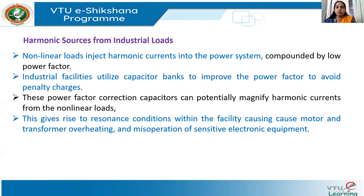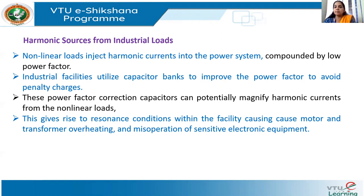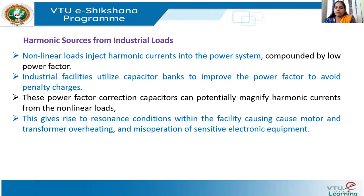Today we are going to see some examples of harmonic sources from industrial loads. Modern industrial facilities are characterized by a widespread use of non-linear loads — you name it, you have a non-linear load in it. All these non-linear loads inject harmonic currents into the power system, causing harmonic distortion in the voltage, as we have seen in the last few lectures.